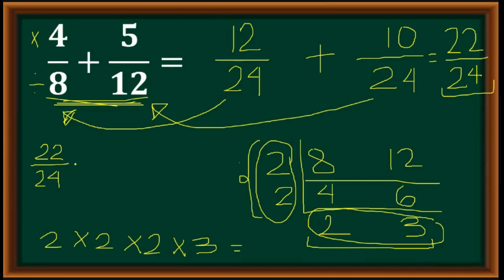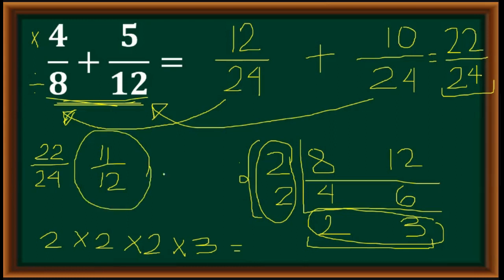We can divide both sides by 2. So 22 divided by 2 is 11, and 24 divided by 2 is 12. Our final answer is 11 over 12.